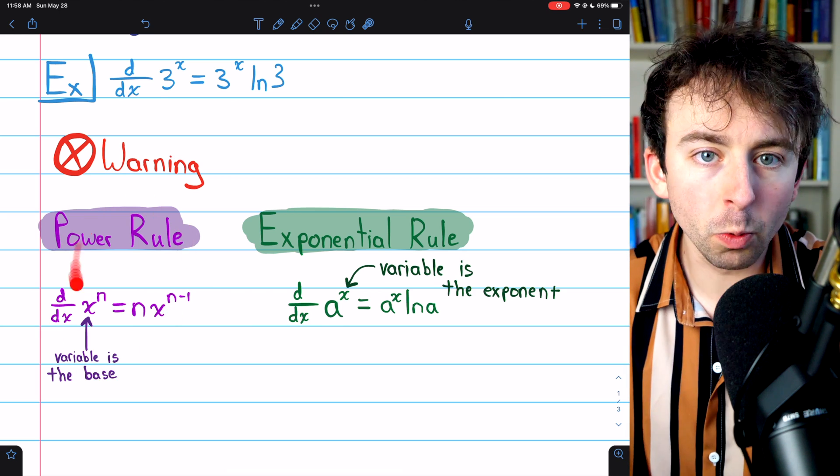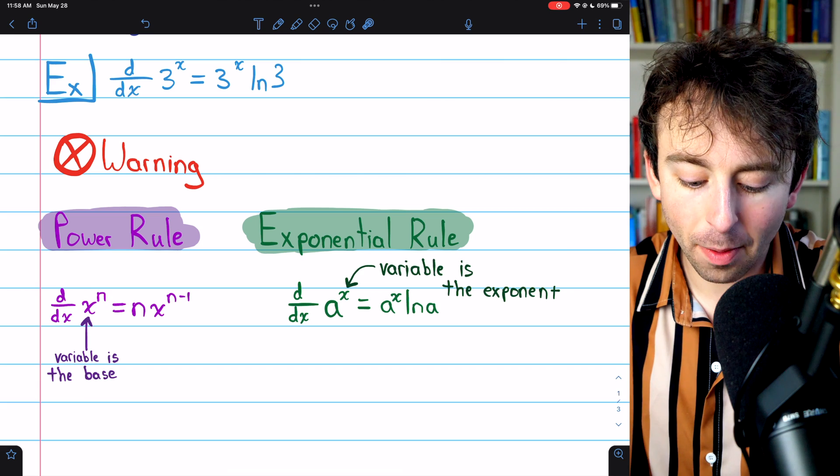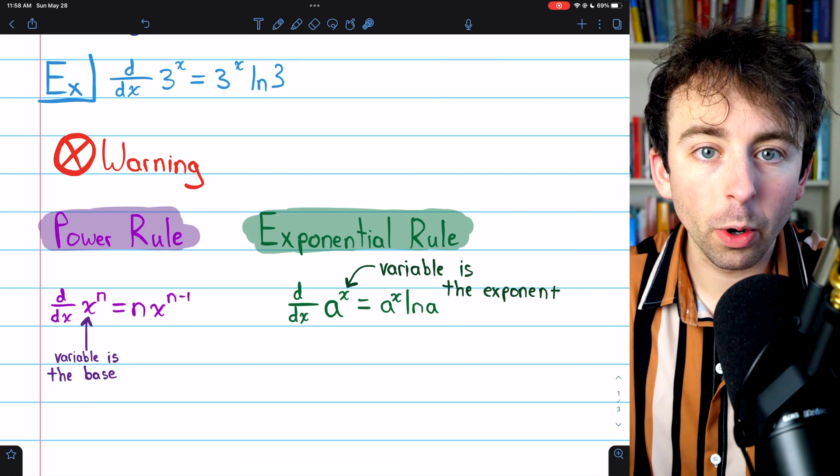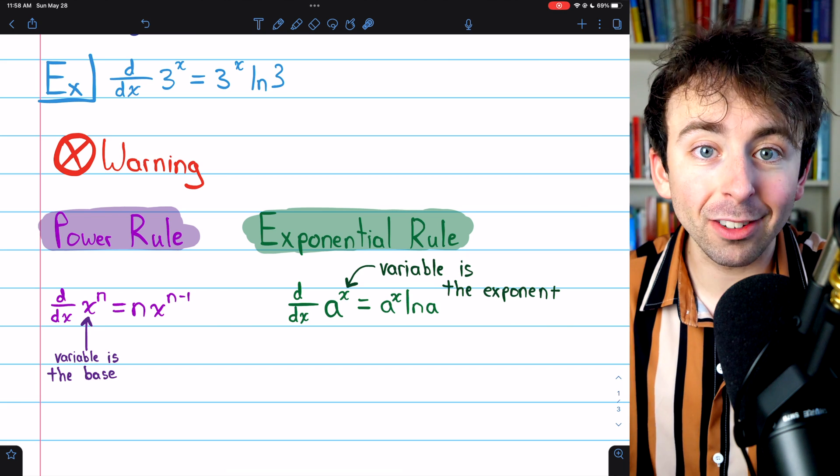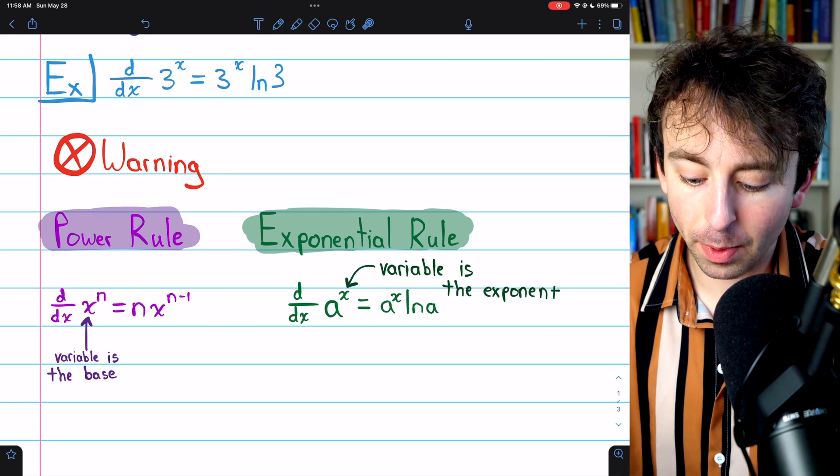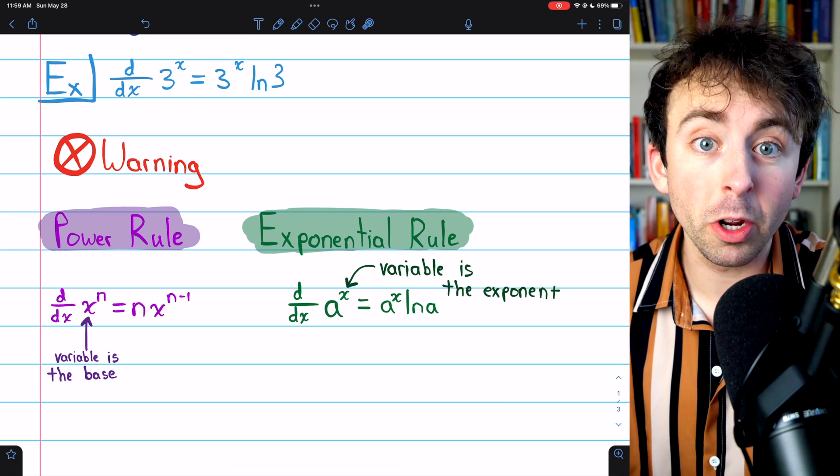When we apply the power rule, our variable is in the base, and we just have some number as the power. For the exponential rule, when we're taking the derivative of an exponential function, the variable is in the exponent. So big difference. Make sure you don't confuse them.